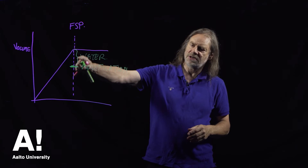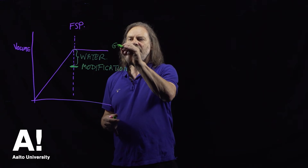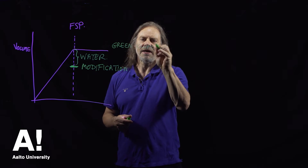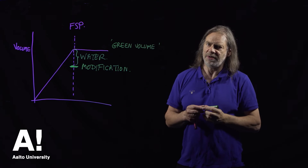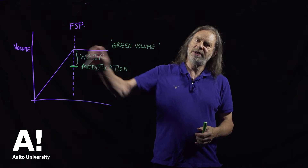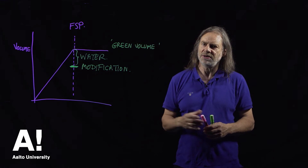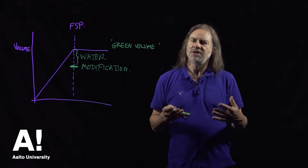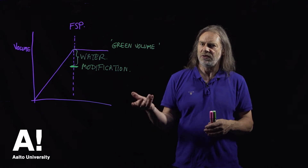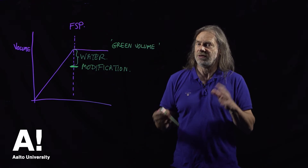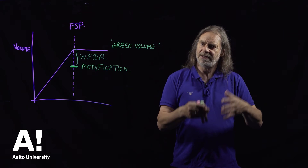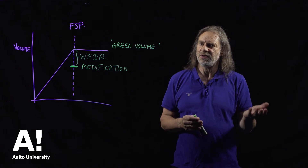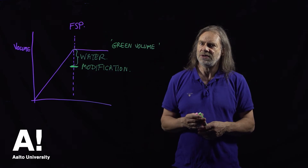We can get quite close to what's called the green volume — the maximum swelling of the wood — but we can't get all the way there. So there's always going to be a little bit of space left in the cell wall for water, but that little bit of space means the moisture content of the cell wall is below a threshold value at which fungi are able to attack. We don't know the exact figure, but it's somewhere of the order of 20% moisture content — 20% of the dry wood mass. When you get to that level, biological decay processes start; if you keep below that level, biological decay doesn't occur.